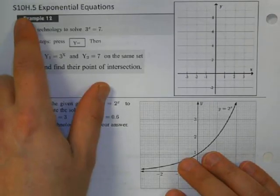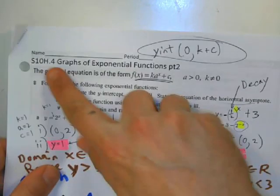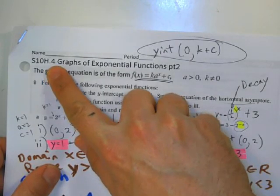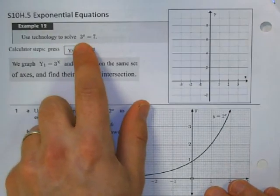Alright, we're going to do S10H.5, which is the back side of the S10H.4 handout. They said, using technology, solve 3 to the power of x equals 7.